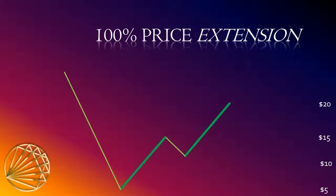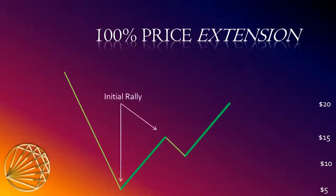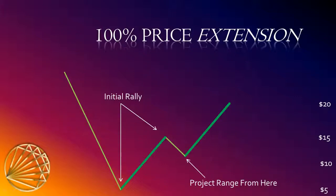The price range of that rally is $10. If we were to use a 100% extension, we would wait for a 100% extension of this initial rally. Remember — geometry is measuring. We measure the length of the first rally against the trend, and we notice that the range from $5 to $15 is a $10 range. Then we project that range from the low made here at $10. If we add the range of $10 to the low at $10, that means we can expect resistance at $20. That is where our 100% extension target is located.